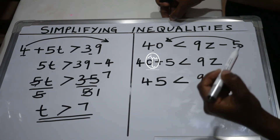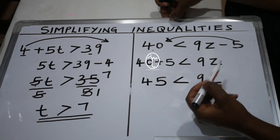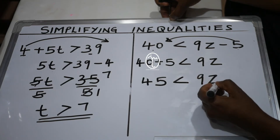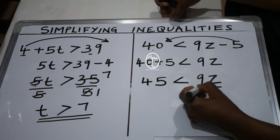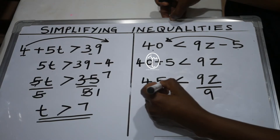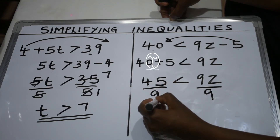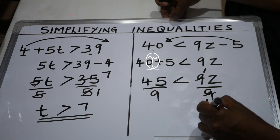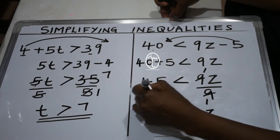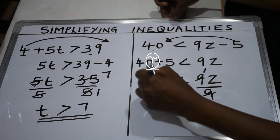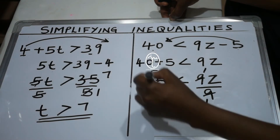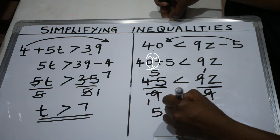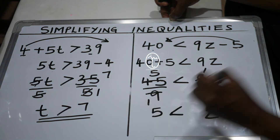To get the value of z, we divide both sides by 9. On the left: 45 divided by 9 is 5. On the right: 9 divided by 9 leaves z. So we get 5 is less than z.